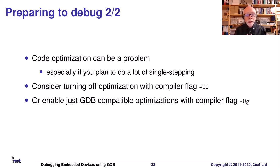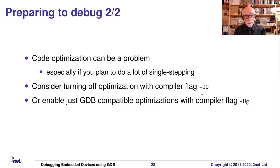The next issue is code optimization. If you've ever tried single-stepping through optimized code, you know it's not easy — the compiler starts doing all kinds of crazy things and the code that gets compiled is not exactly the same as what you wrote. It's usually a good idea to turn off or minimize optimization when debugging. You can do this explicitly by setting -O0, or use -Og for GDB-compatible optimizations. For our examples, I'm compiling with no optimization at all.